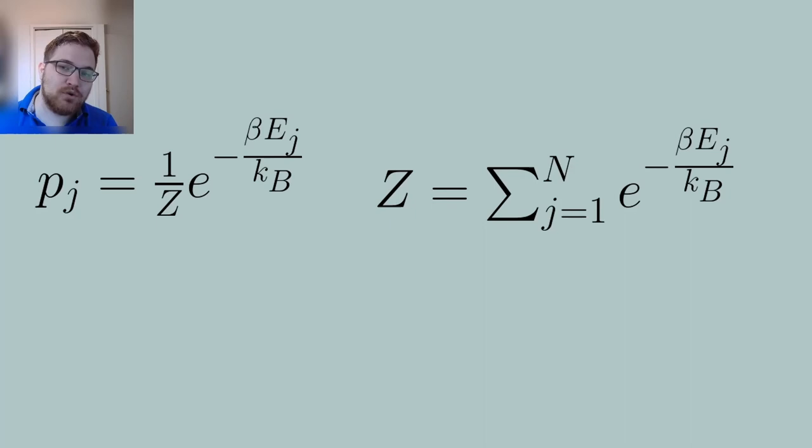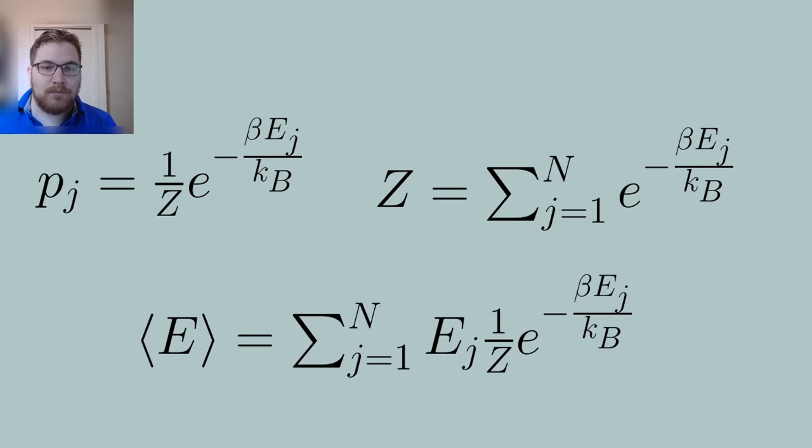From the dice example we have more or less already solved the problem, except instead of six possible microstates we instead have N possible microstates. Then the resulting probability distribution is given by the following expression you see here on your screen, where we have replaced the parameter k by the Boltzmann constant k_B and energy takes the role that the face value of the dice did previously. Now what does beta actually mean in this situation? Just as before, beta determines the distribution's energy. From this perspective beta is the determining factor for our energy and sets our energy scale.